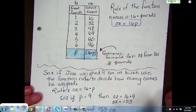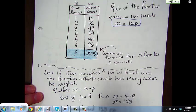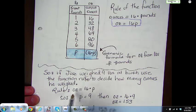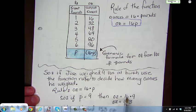So, if Jose weighed 9 pounds at birth, the function rule to decide how many ounces he weighed is ounces equals 16 times p. And, if he weighed 9 pounds, then ounces would be 16 times 9, which would be 144 ounces.